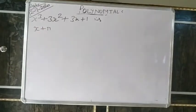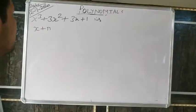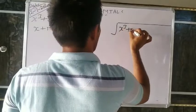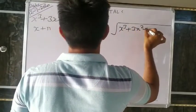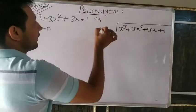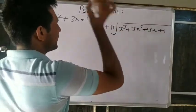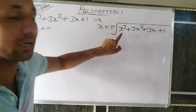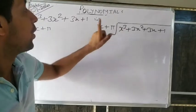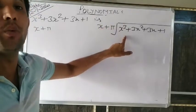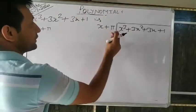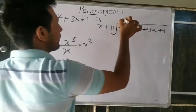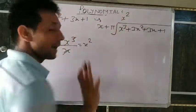What number do we write here such that when multiplied by x it becomes x³? x³ divided by x gives x². So write x² in the quotient. Multiply x² by (x+π): x² times x gives x³, and x² times π gives πx². Always we will subtract — change the sign.